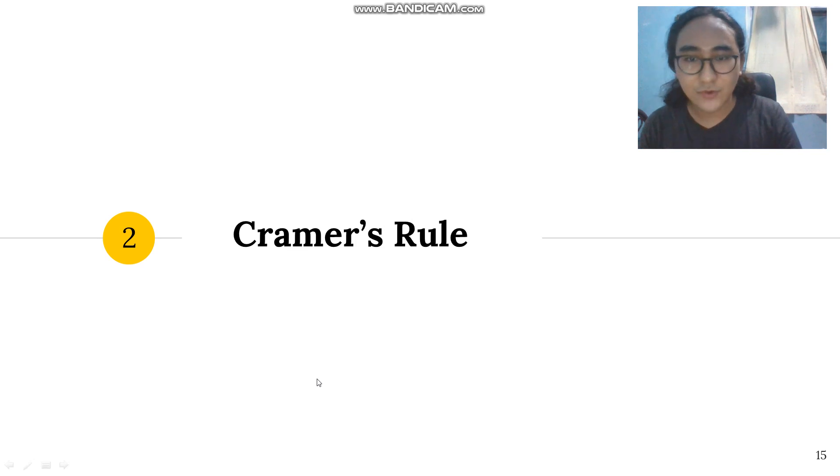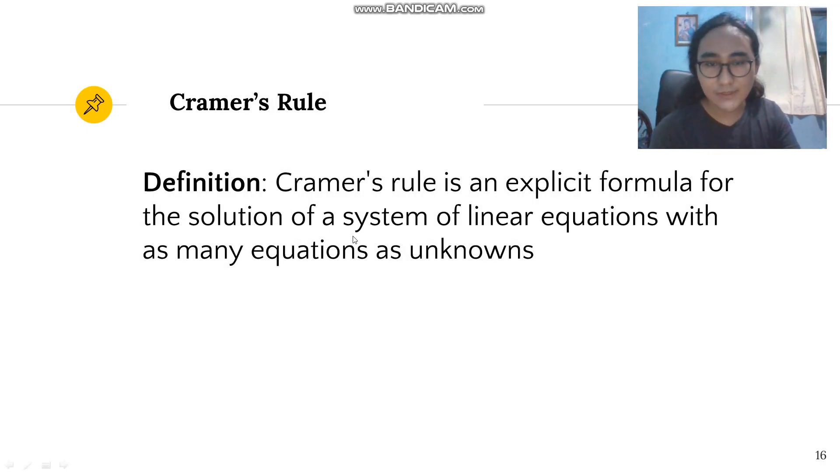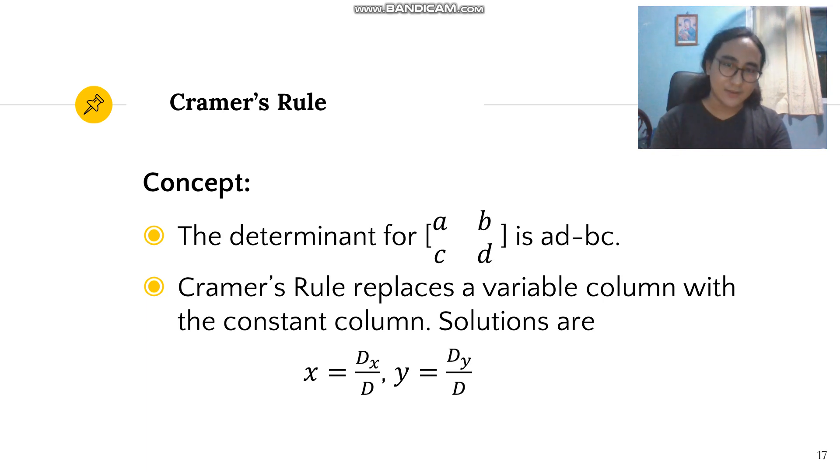Now we have the Cramer's rule. Cramer's rule is an explicit formula for the solution of a system of linear equations with as many equations as unknowns. A system of linear equations is basically a set of linear equations. Linear equation means all the variables have an exponent of 1.